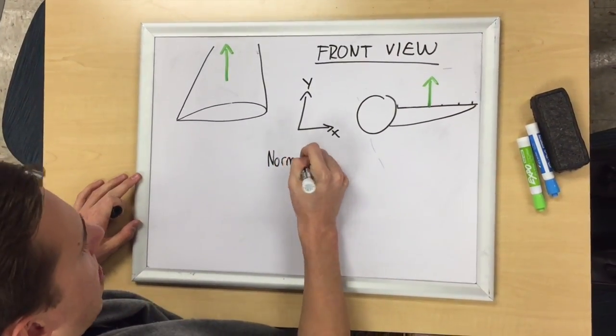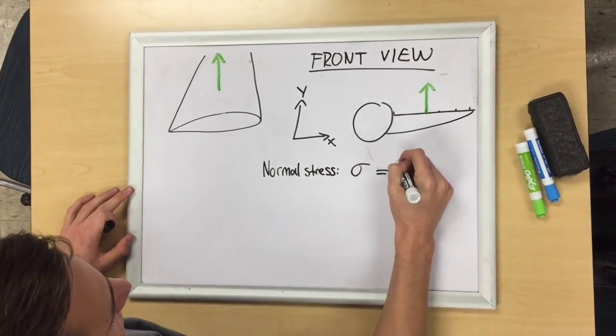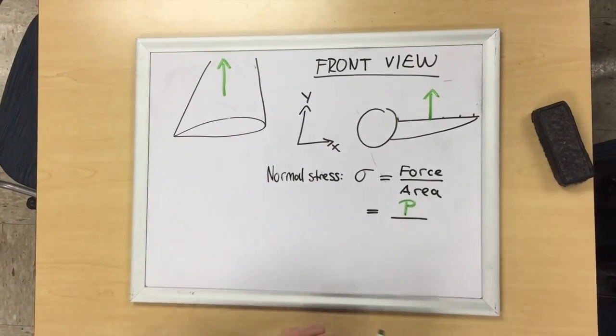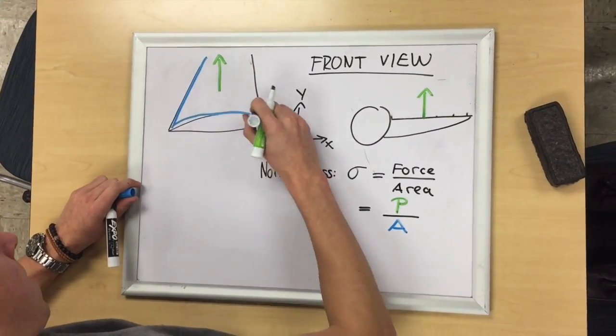Stress, as mentioned earlier, is force over area. Force here is the lift force and the area used here is the entire top area of the wing, as highlighted in blue.